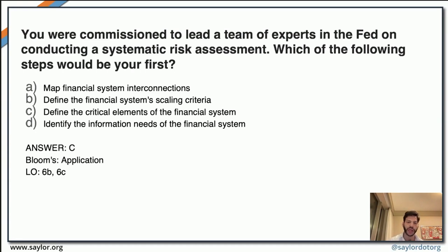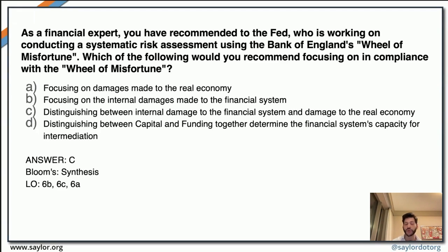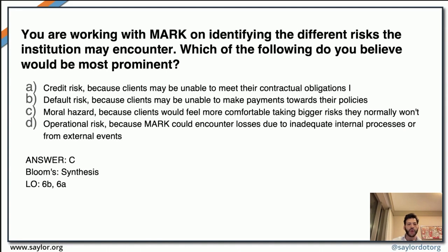The next question again asks you to be a financial expert advising the Fed on implementing a systemic risk assessment, this time using the Bank of England's Wheel of Misfortune. Recall from Unit 6 the components of the Wheel of Misfortune. One key element is distinguishing between internal damages to the financial system and damage to the real economy. The answer for this question is C.